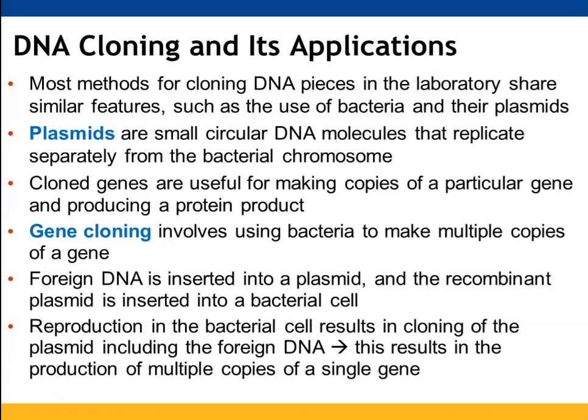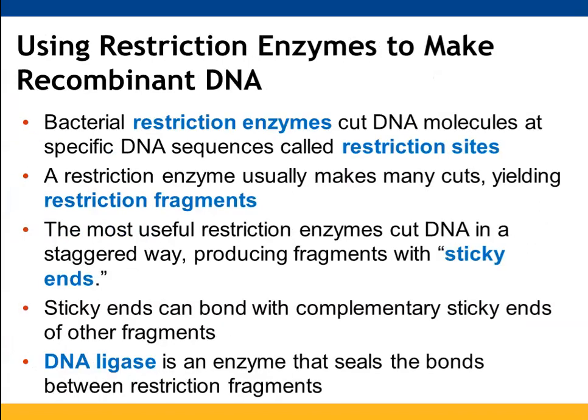Plasmids found in bacteria consist of circular DNA molecules and go through the replication process just as the bacterial chromosome does. When genes are cloned and inserted into these plasmids, if they are inserted successfully, we will see the cloning represented by the proteins that are produced. Gene cloning helps us make lots of copies — we take foreign DNA, put it into a plasmid vector, insert that plasmid into a bacterial cell, and get many copies of that particular gene.